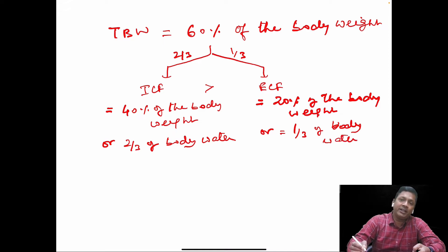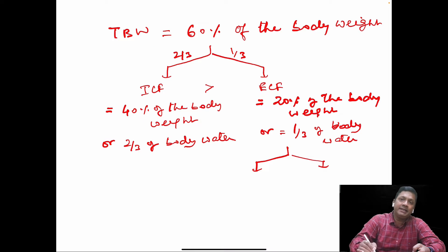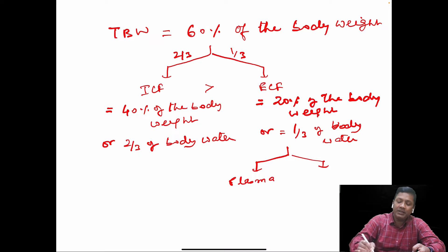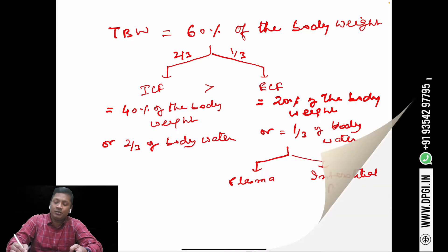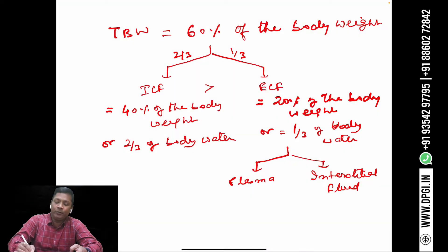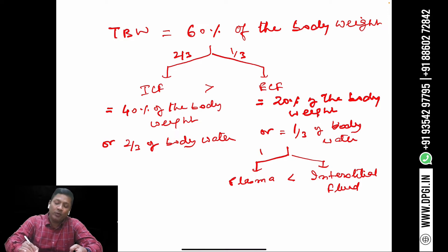The extracellular fluid is further divided into two compartments: one is called plasma and the other is called interstitial fluid — the fluid present in between the cells. Out of these two, the interstitial fluid is more than the plasma volume. The plasma volume is one-fourth of the ECF and the interstitial fluid is three-fourths of the ECF.